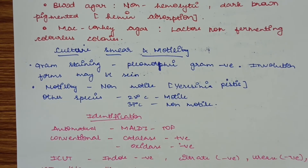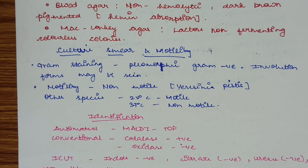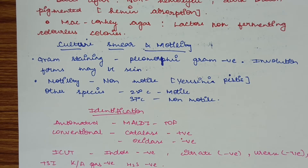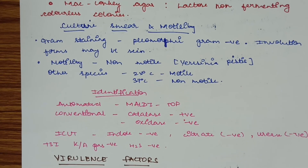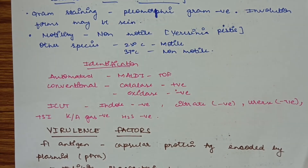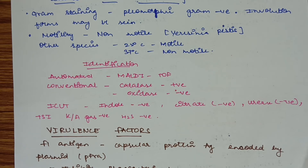In cultured smear, pleomorphic gram-negative forms are seen and involution forms may also be seen. In motility, Yersinia pestis is non-motile at 25 and 37 degrees Celsius. Other species of Yersinia are motile at 25 degrees Celsius and non-motile at 37 degrees Celsius, but Yersinia pestis is non-motile at any temperature. Identification can be done by automated methods such as MALDI-TOF and VITEK, or by conventional methods using catalase, oxidase, and ICUT tests. It is catalase positive; oxidase negative; indole negative; citrate negative; urease negative; TSI is alkaline over acid, gas negative, and H2S negative.